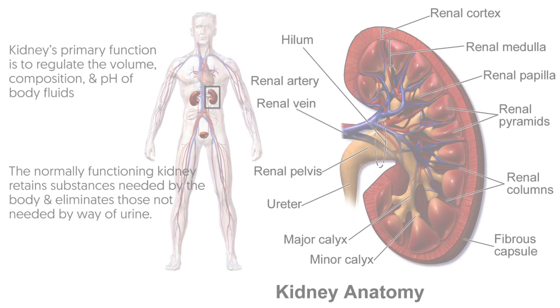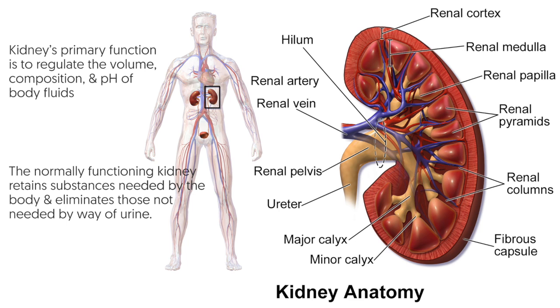Welcome to this video about diuretics. Before we get into the details of diuretics, let's look at the basic anatomy and physiology of the kidney. The kidney's primary function is to regulate the volume, composition, and pH of body fluids. The normally functioning kidney retains substances needed by the body and eliminates those not needed by way of urine.